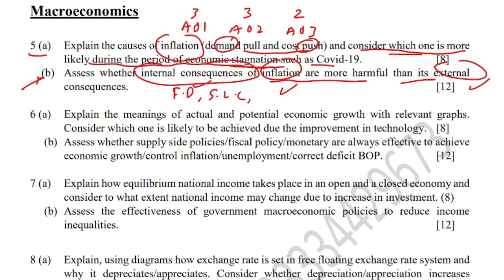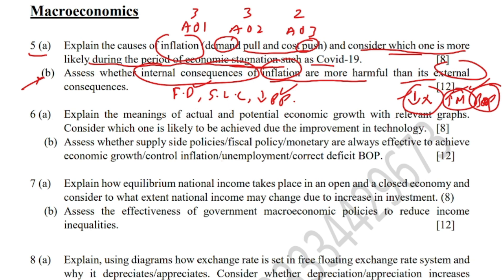For internal consequences, you can explain fiscal drag, shoe leather costs, and fall in purchasing power of consumers. For external consequences, explain fall in exports, rise in imports, and balance of payments deficit. Exports fall because high inflation makes other countries uncomfortable purchasing from you. Imports rise because local consumers find local goods expensive and buy more imported goods. The balance of payments moves to deficit as exports are low and imports are high.